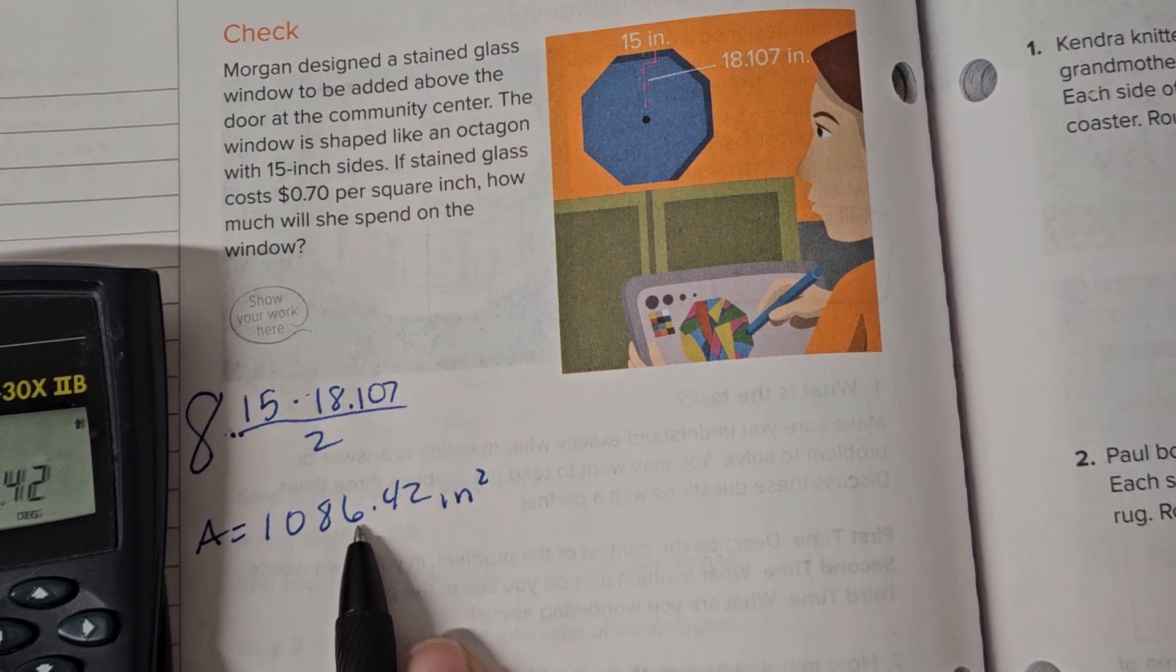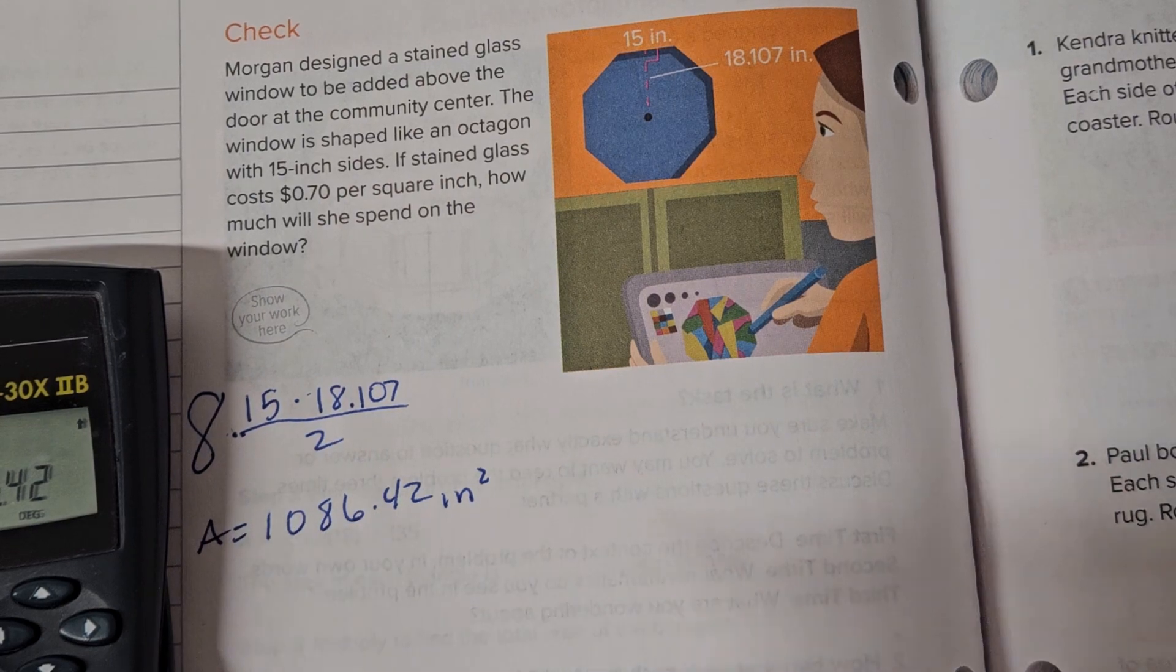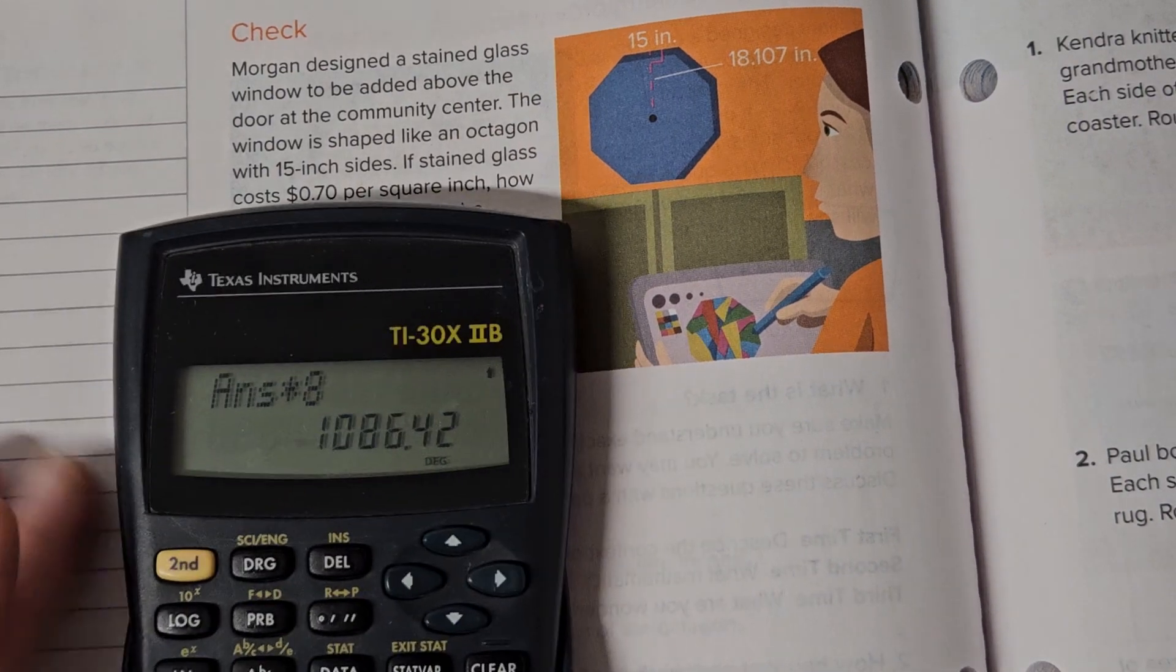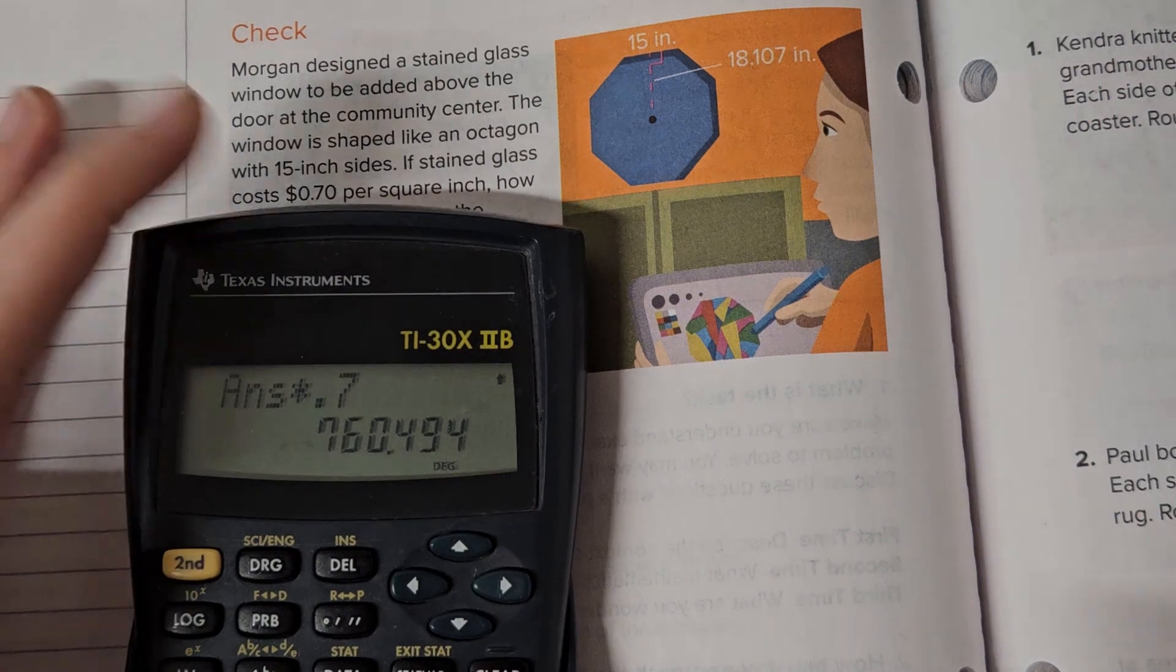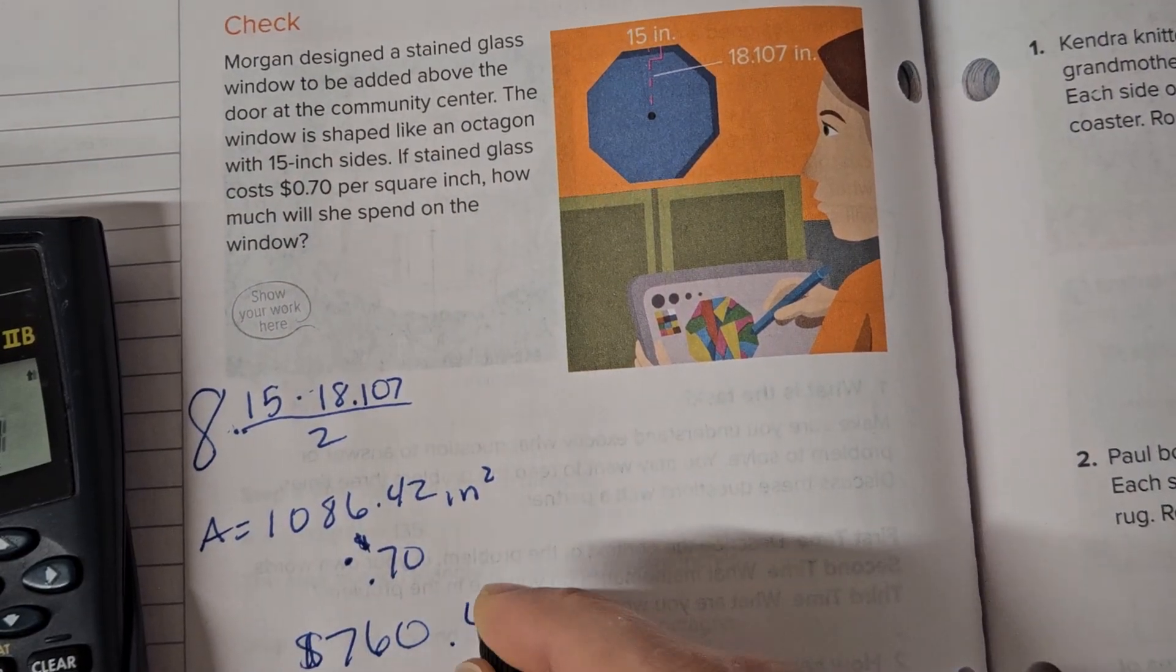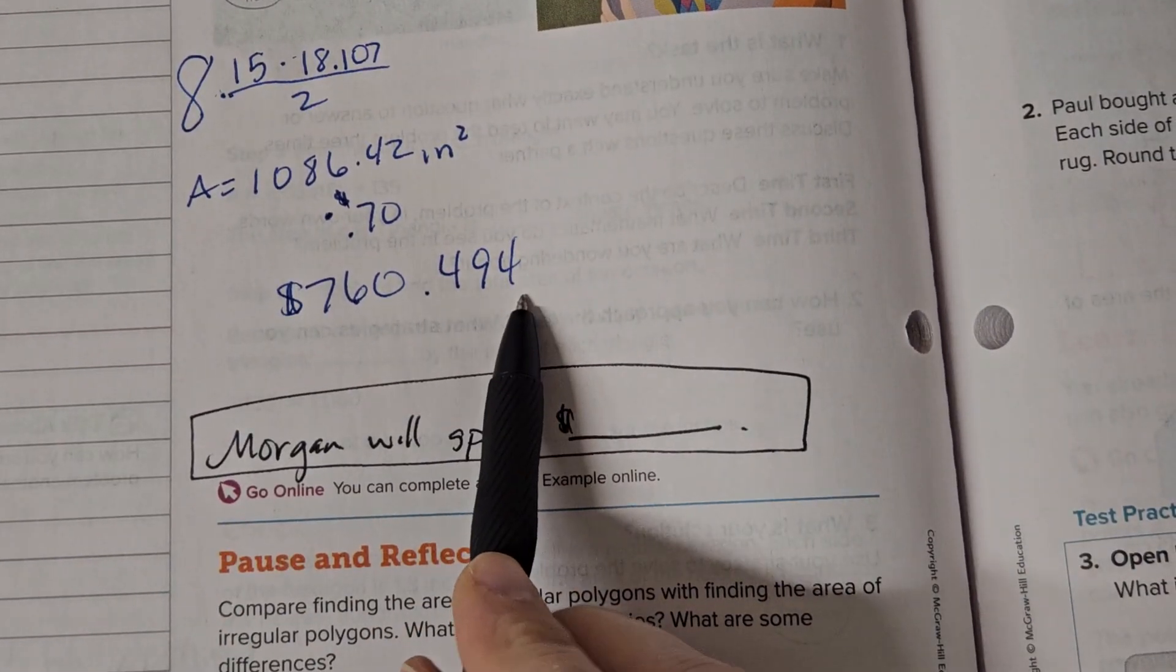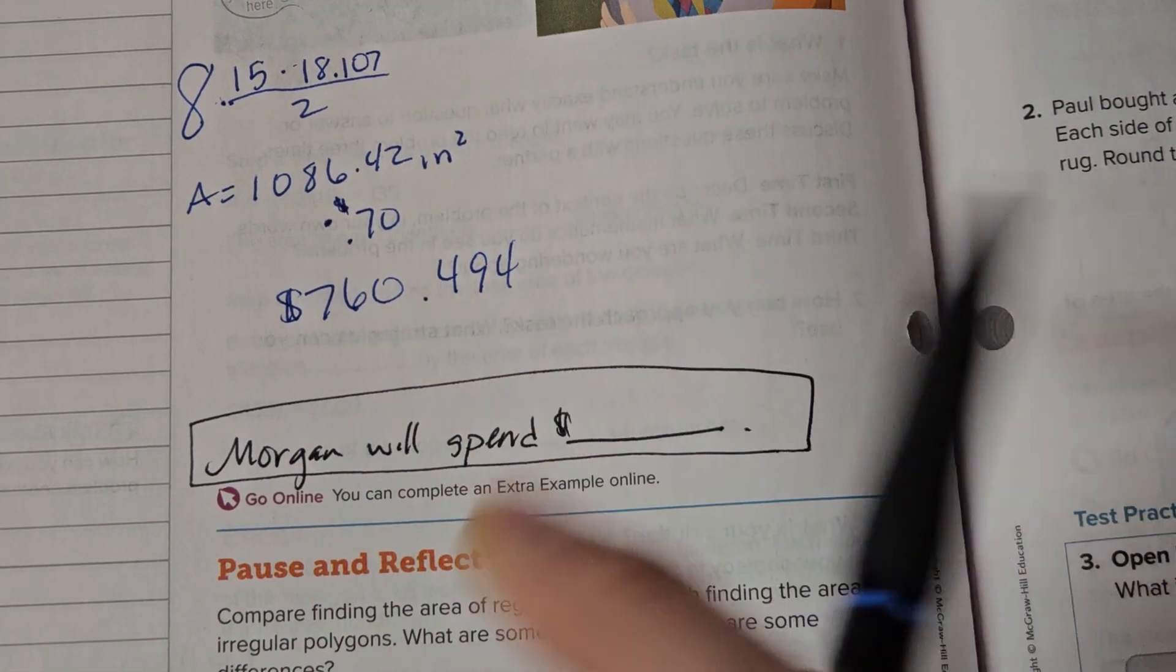And for every one of these, it's going to cost 70 cents. So we're going to need to take this and times it by 70 cents. 760.494 cents. Now I'm not sure how good you are with money, but you don't spend this kind of money. You spend that kind of money. So we have to always round to the nearest penny.